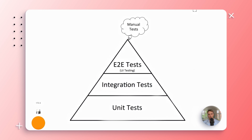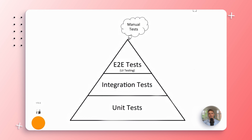The tests further up in this pyramid are more valuable in that they encompass more code, so they are more likely to catch a bug if one appears somewhere in your code. A unit test will only test a single unit, so if the bug resides anywhere else it will go unnoticed. However, the tests at the top also tend to be more expensive to write and more expensive to execute in terms of CPU time on your continuous integration server.